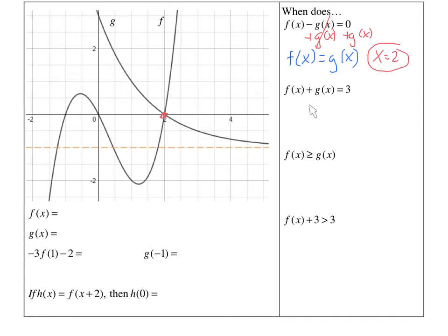For this problem right here, this is saying when is f plus g equal to 3? Could I technically subtract the g over and go when is f equal to 3 minus g? That does not make it easier. So for this one, we have to kind of just look at the graph and think about it — when is f plus the function of g equal to 3? We're going to go one by one through the graph and try to figure it out. Is it easier to look at the graph or make a table? Some of you a table might help, some of you can see it on the graph.